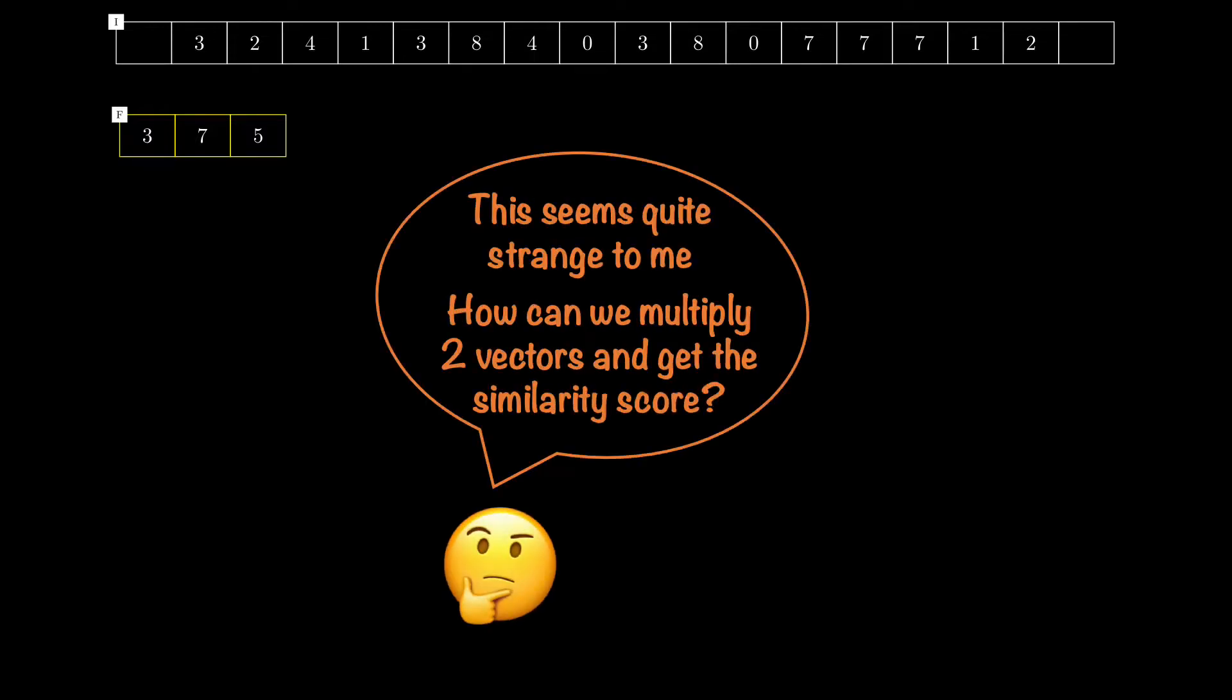Now this should seem strange to you. How can the correlation operation, which is about multiplying two vectors and then summing the entries of the result, provide a similarity measure? So let's first justify that the correlation operation can indeed give us that measure of similarity.